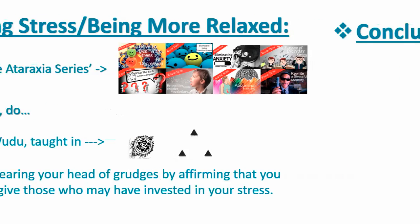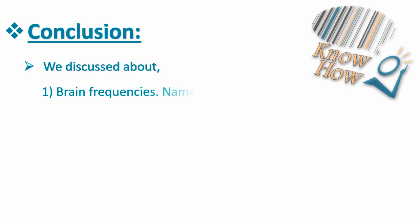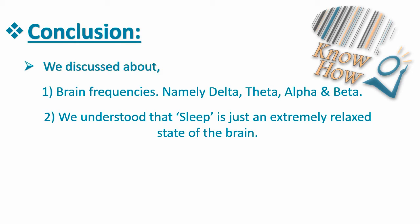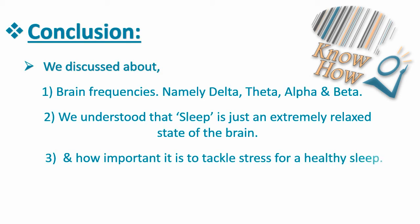So let's bring this video to its conclusion. We discussed different brain frequencies — delta, theta, alpha, and beta brain states — and from that discussion we understood that sleep is just a really relaxed state of the brain. From that simple point, we came to understand how important it is that in order to have healthy sleep, we need to be well equipped with tools and practices that relax us. I briefly added about voodoo and forgiveness and how they can potentially relax a lot of people to a very significant degree.